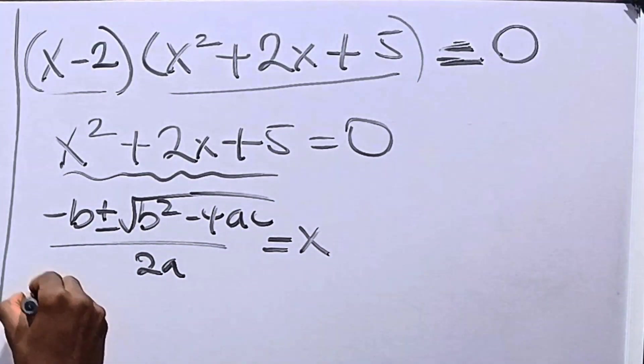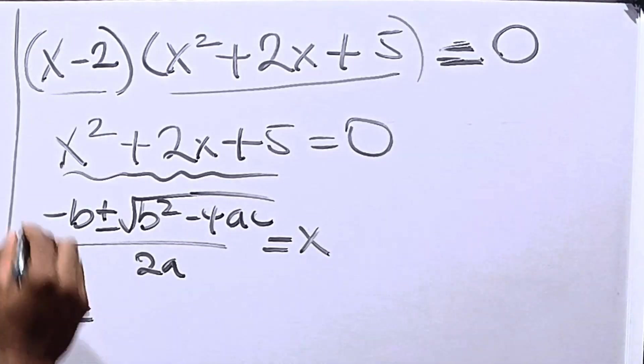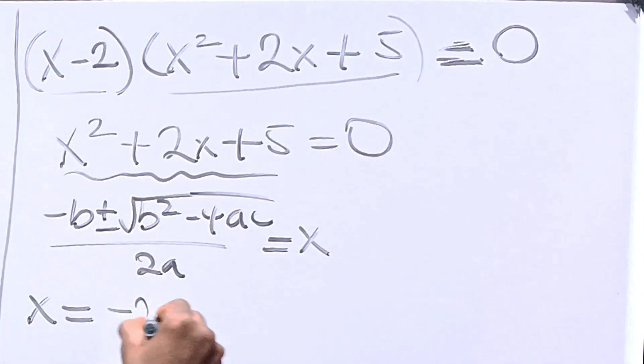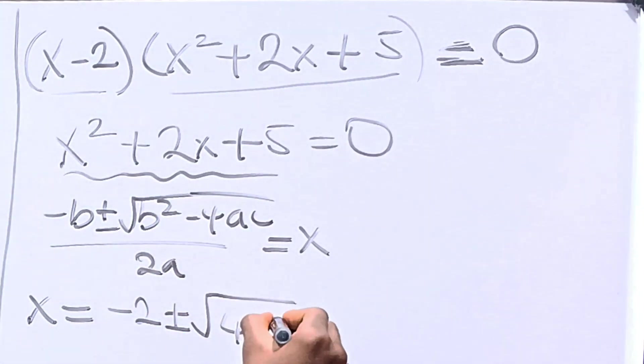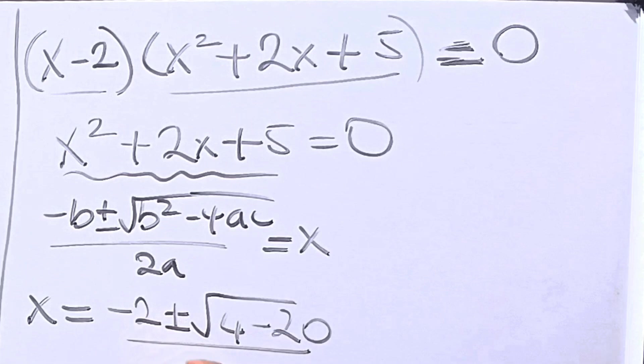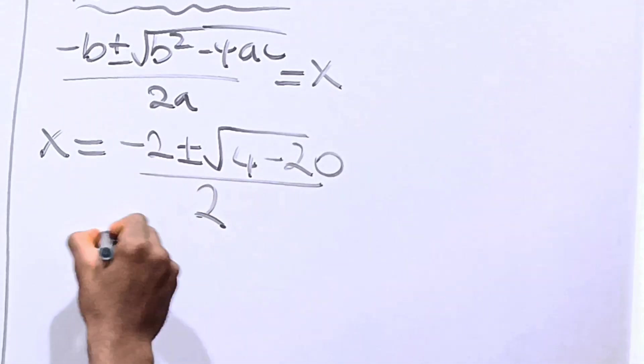Hence, from here, x will be equal to minus b, minus 2, plus or minus square root of 2 squared is 4 minus 4 times a times c is negative 20, all over 2 times 1 is 2.